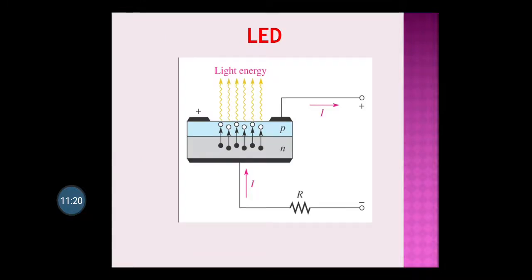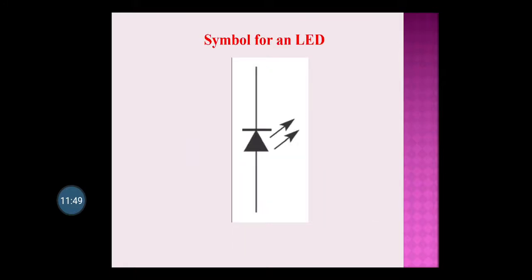Here you can see how the light is coming out: the upper layer is p-type semiconductor and the lower one is n-type semiconductor. The black dots are electrons and the white dots are holes. When the electrons and holes recombine, light comes out — that is how the LED gives us light. In the symbol, the arrow is anode, the straight line is cathode, and the two outward arrows show light coming out.